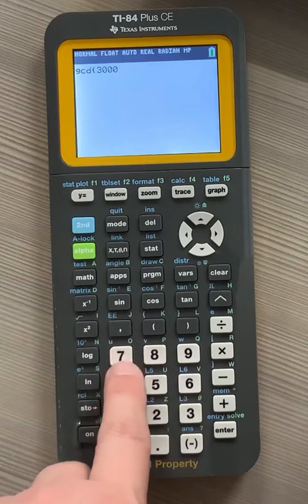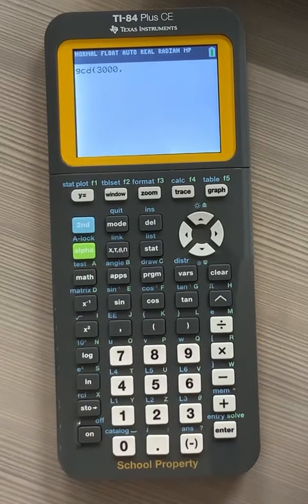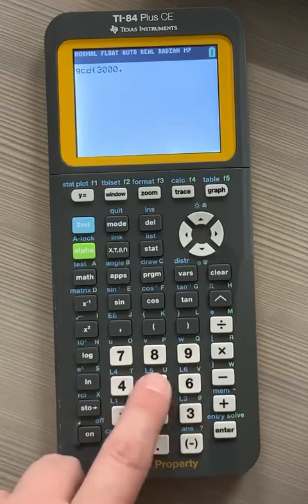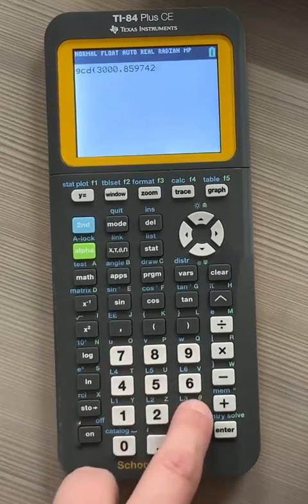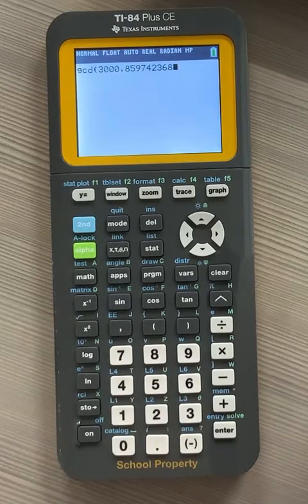Hit the comma, which is right above the 7, and then type another number. I don't know, 85974268. It's a huge number. I'm just, you know, to show you.